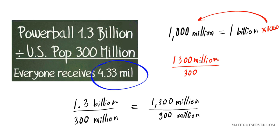What does this mean? This means that you divide 1.3 billion or 1,300 million into just 300 people. Is this the population of the United States? 300?